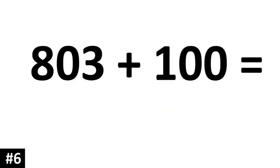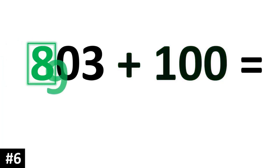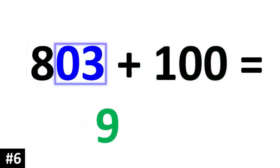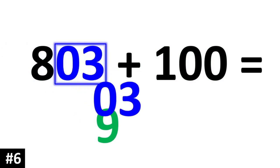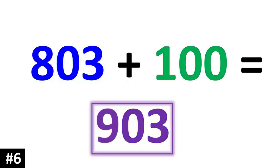803 plus 100. The 8, which is the hundreds digit, is going to go up to 9. The other numbers stay the same, so 803 plus 100 is 903.